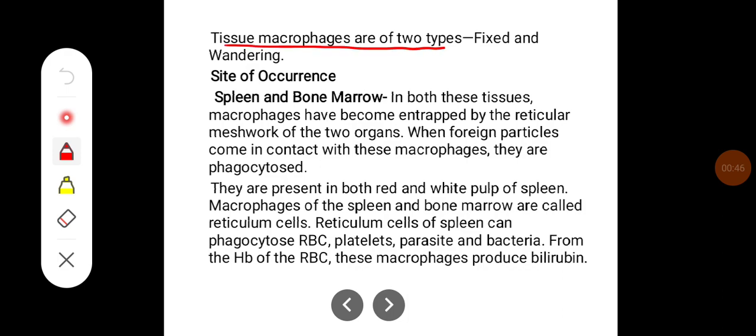The tissue macrophages are of two types, fixed and wandering. Some of the sites of occurrence of fixed macrophages are spleen and bone marrow.